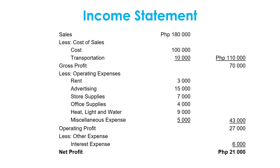From here, we will subtract the operating expenses to determine the operating profit. From the operating expenses, we have a total of 43,000 pesos. Subtracting 43,000 from 70,000 gives an operating profit of 27,000 pesos. Finally, to determine the net profit, we subtract the other expense from the operating profit. Since the firm paid an interest expense of 6,000, the net profit will be 21,000 pesos. Note that the answer is a positive number, so we can call the 21,000 a profit.